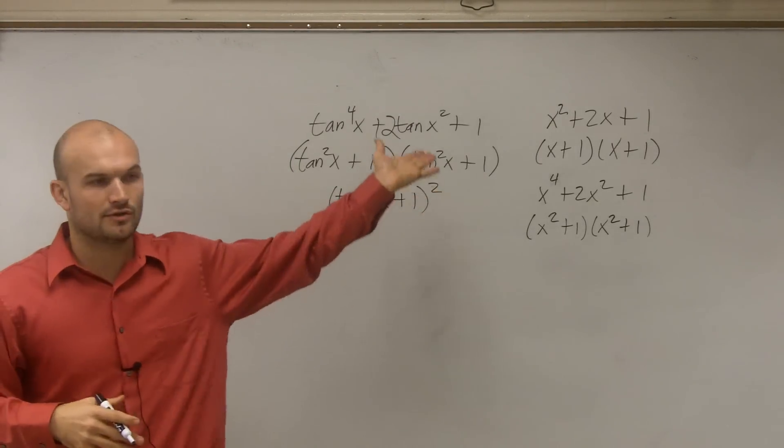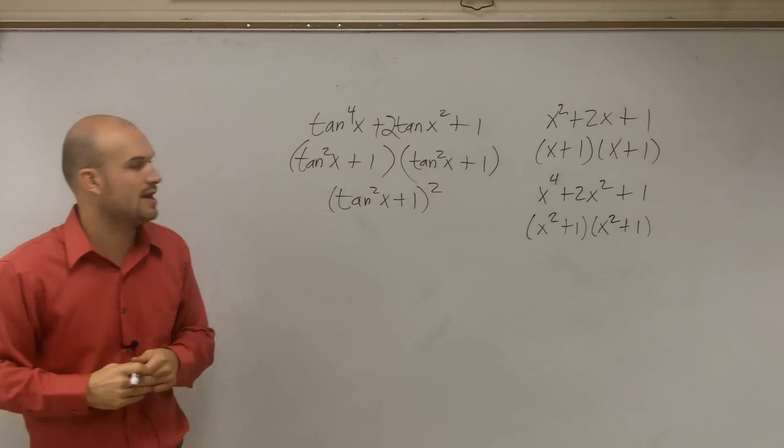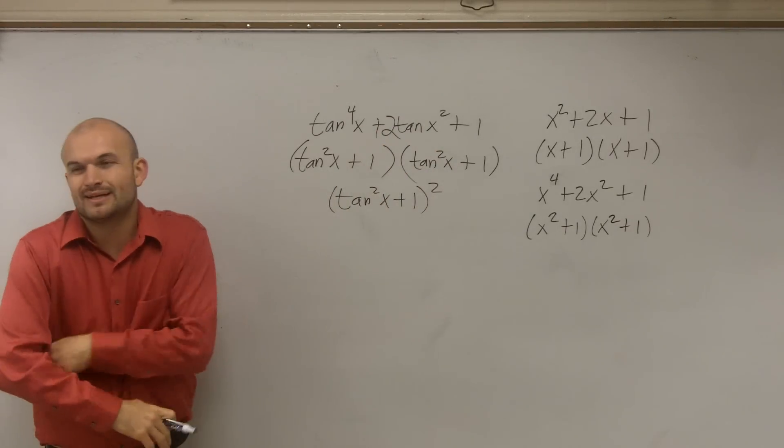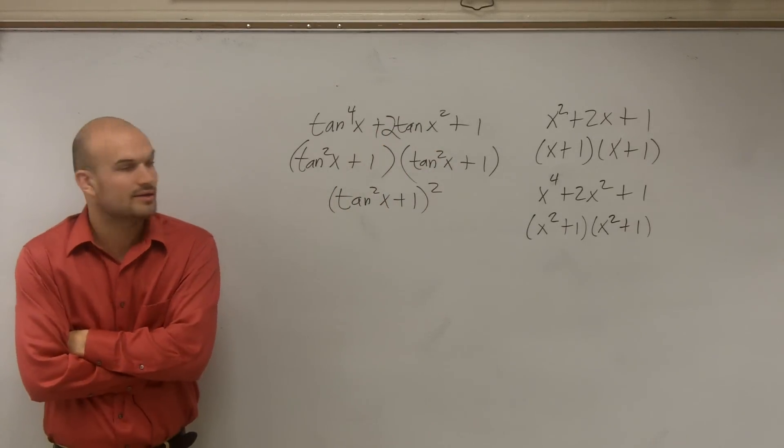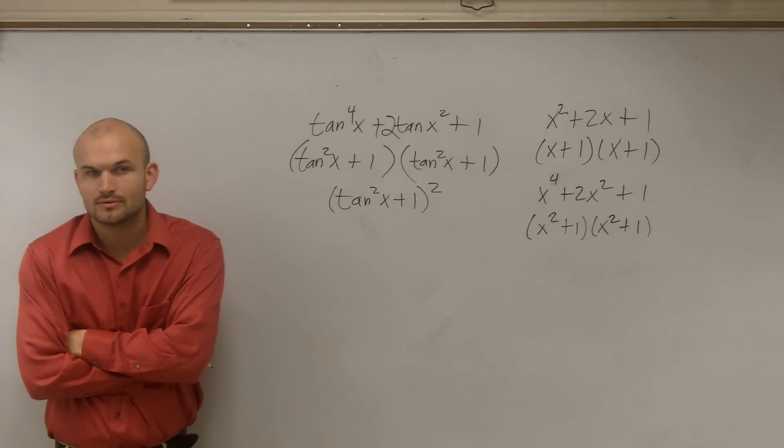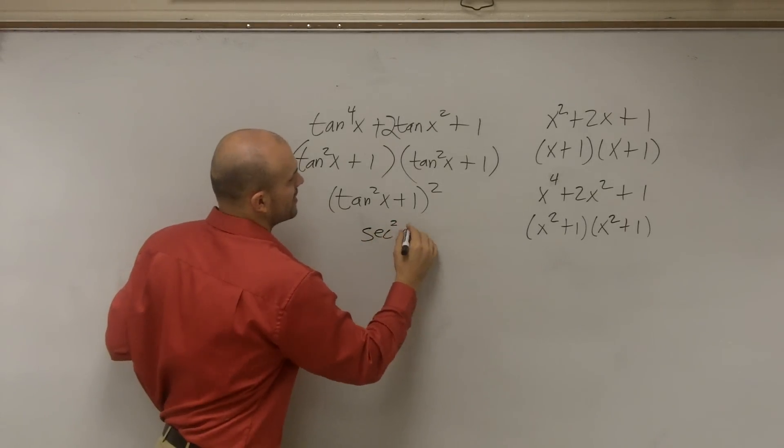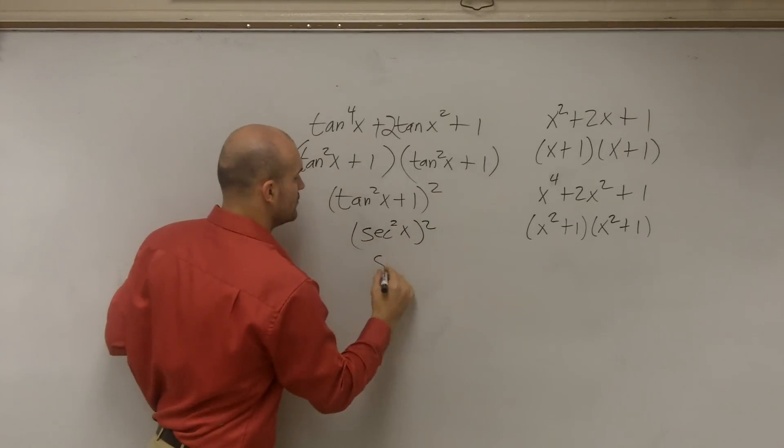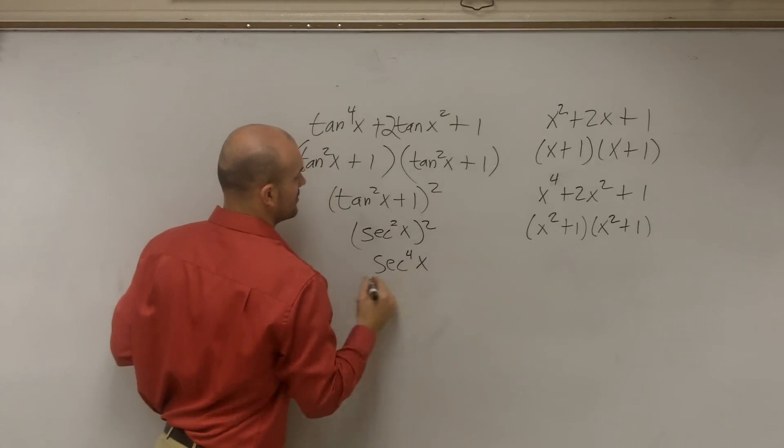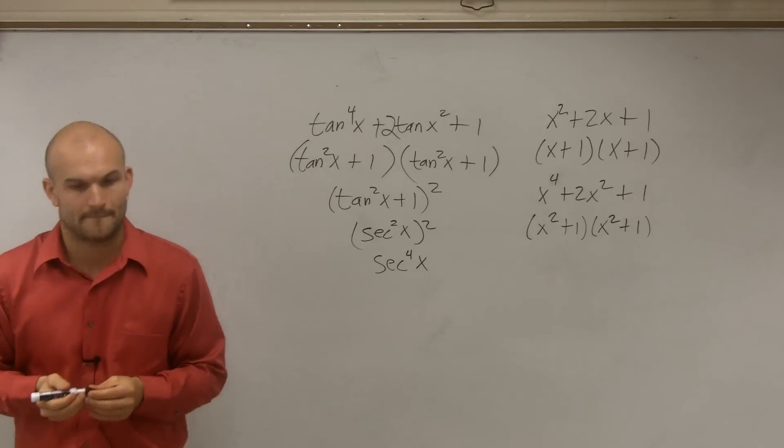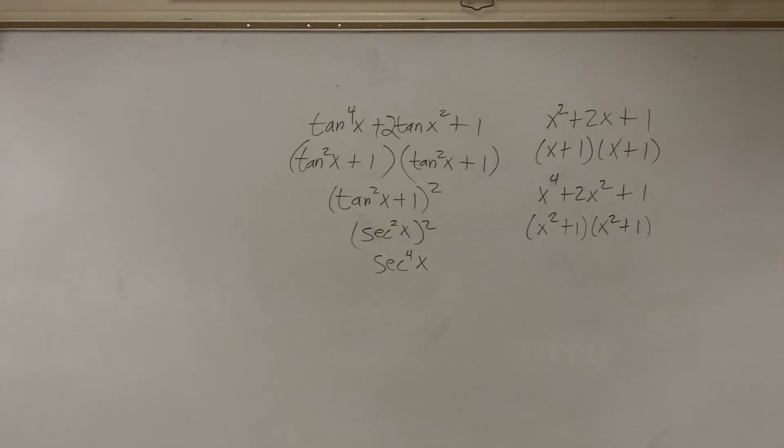Which I could have done that for all of those before, but I left it kind of separated out. So now what we need to look at is what is tangent squared plus 1 equal to? Secant squared. So you could really say it's secant squared of x squared, which is equal to secant to the fourth of x. OK? Done, son.